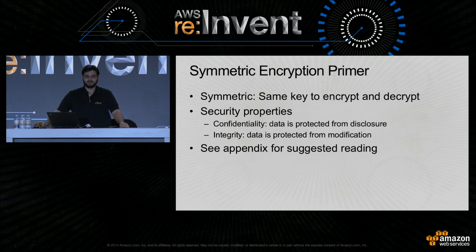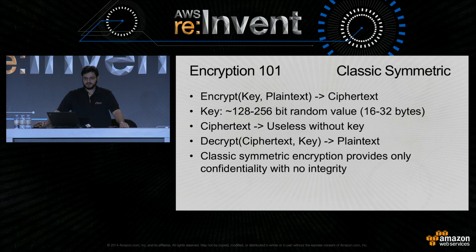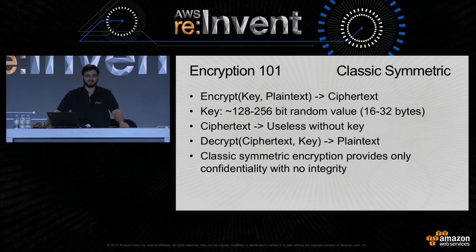There is some suggested reading in the appendix. At a very high level, encryption is the process of combining a key with some plain text data to produce a ciphertext. For the types of encryption we're talking about today, the key will typically be a 128 to 256-bit random bit string. The ciphertext should have the property that it is useless without the key — it doesn't reveal any information about the plain text to someone who doesn't have access to the key, often with a caveat about length. Decryption is the reverse: given a ciphertext and a key, you can produce plain text.